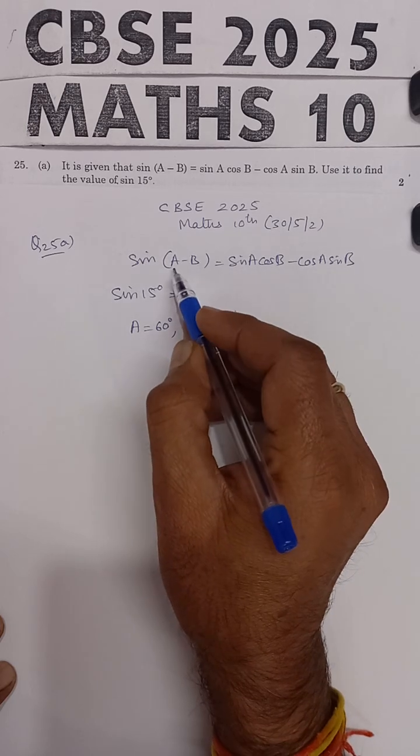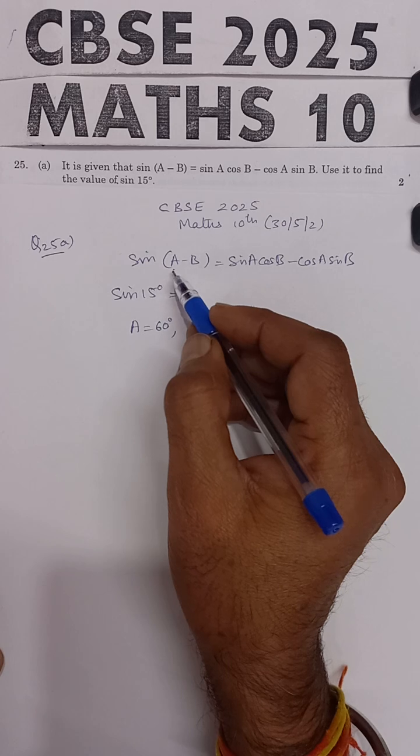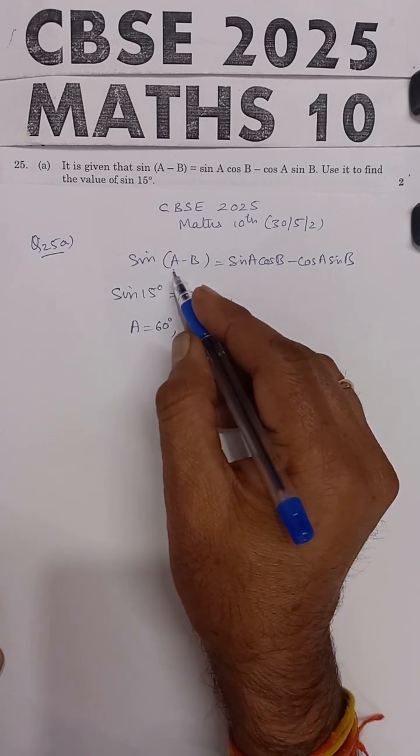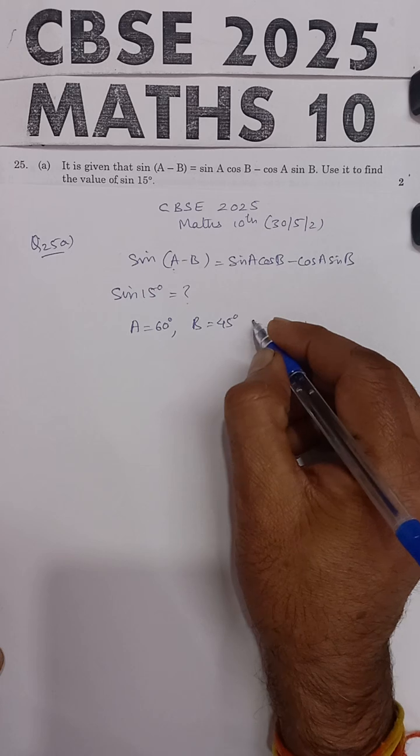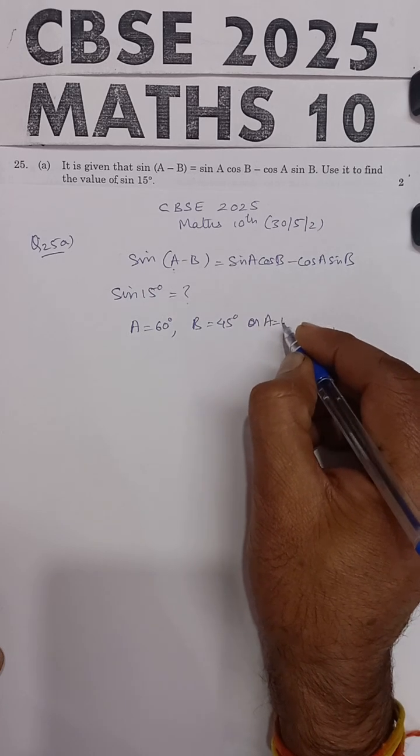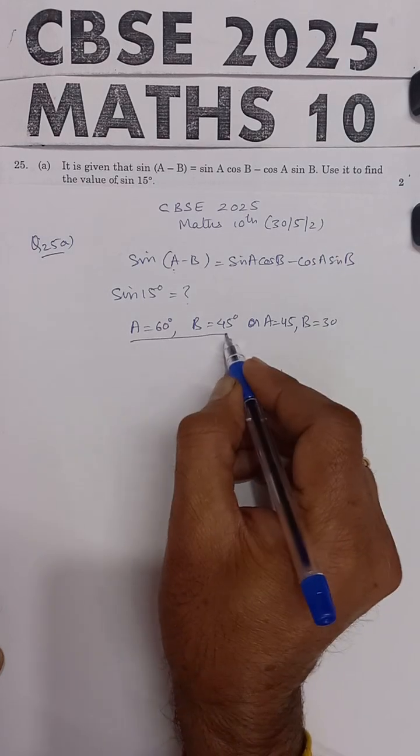The reason is because 60 minus 45 will be 15 degrees. Alternatively, you can use A is equal to 45 and B is equal to 30 degrees. You can use any values. We are using this first approach.